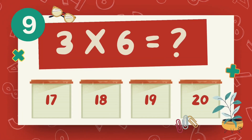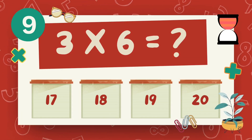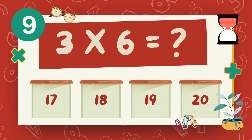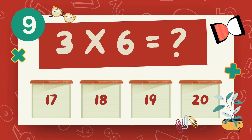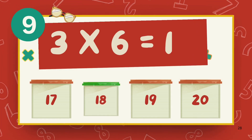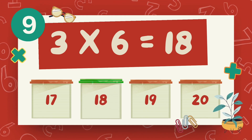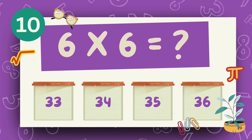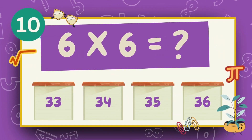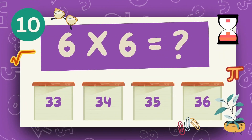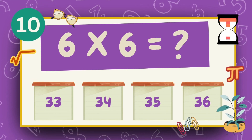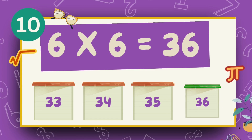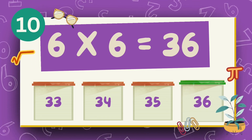What is 3 multiply 6? What is 6 multiply 6? The answer is 18.